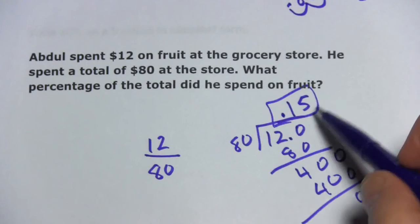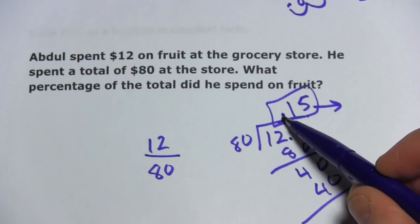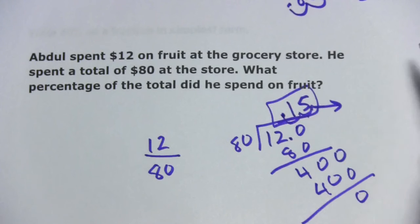So we've got a 0.15. It's not our answer yet. We have to move the decimal place two to the right. So that would be 15%.